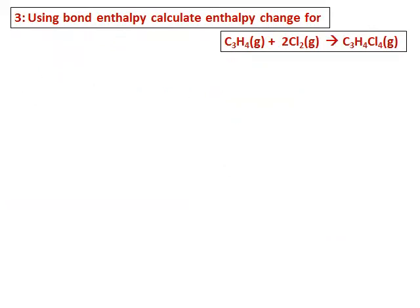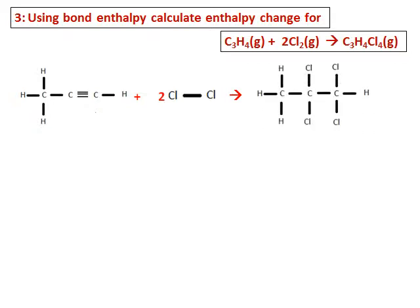One more question, using the bond enthalpy, calculate the enthalpy change for C3H4 combining with chlorine to give you C3H4Cl4. As before, write down the Lewis structure for C3H4 and you notice there is a triple bond between carbon and carbon and chlorine and chlorine, there is a single bond. And then this when reacts to give you C3H4Cl4 and when I write the structure, you see that all of them are single bonds.